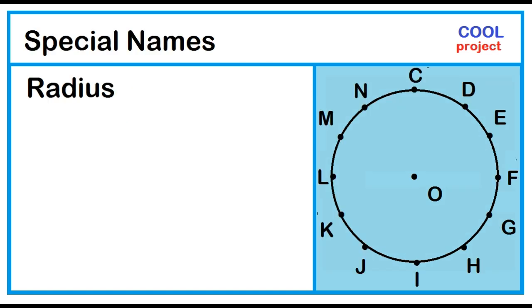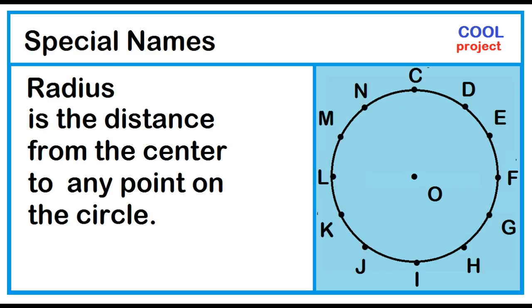Radius. Radius is the distance from the center to any point on the circle. Example: Segment OK.